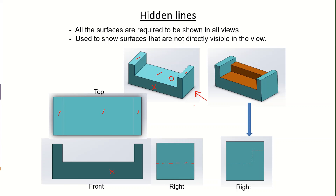Since we are not able to see that face directly, we have to use the dashed line or dotted line. Another example is a step in the middle of a solid component — that step is indicated by a dotted line, as we are not able to see it directly when looking from the right side. Hidden lines are extremely important for the creation of the engineering drawing.